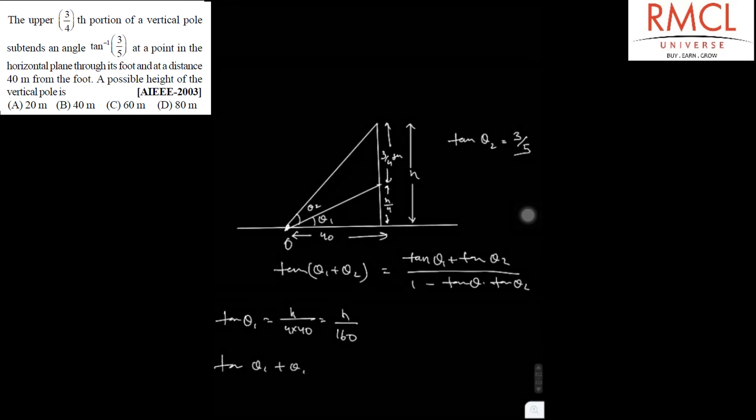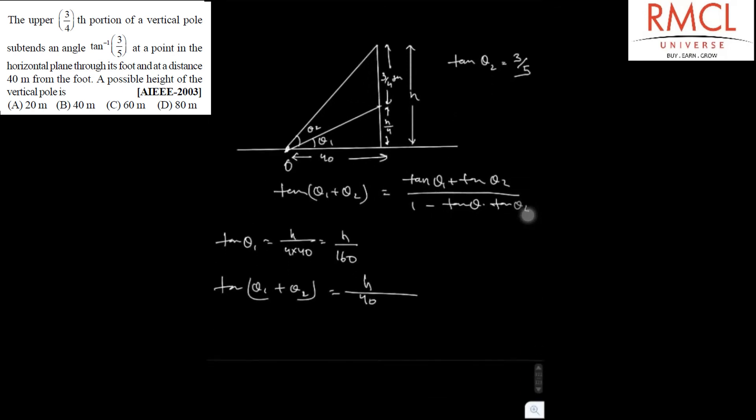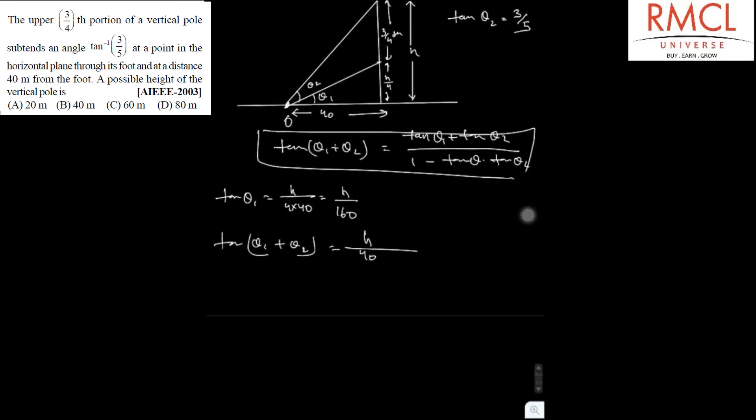So if you put the values of tan theta 1 and tan theta 1 plus theta 2 in this equation and we know that the tan theta 2 is equal to 3 by 5. So we have h by 40 is equal to h by 160 plus 3 by 5 divided by 1 minus h by 160 multiplied by 3 by 5.